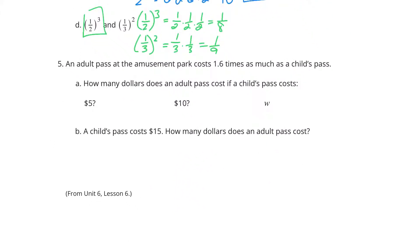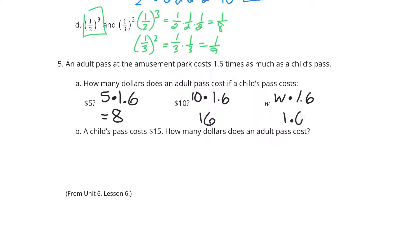An adult pass at the amusement park costs 1 and 6 tenths times as much as a child's pass. How many dollars does an adult pass cost if a child's pass costs $5? That's going to be 5 times 1 and 6 tenths, which gives you 8. If the child's pass costs 10, then 10 times 1 and 6 tenths is 16. If it costs W, then W times 1 and 6 tenths simplifies to 1.6W. A child's pass costs $15 — you could do 8 plus 16 is 24, and indeed 15 times 1 and 6 tenths is also 24.